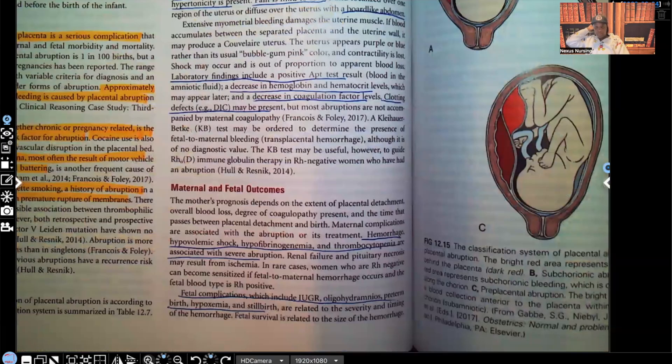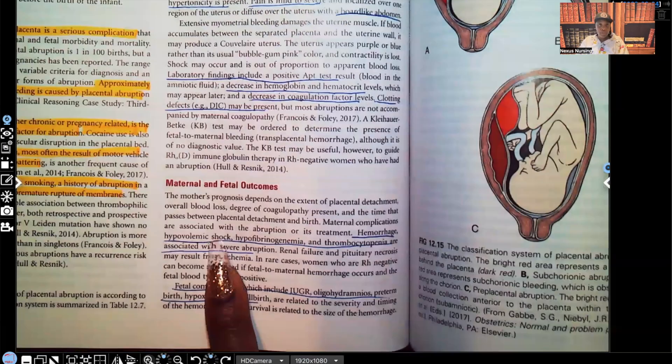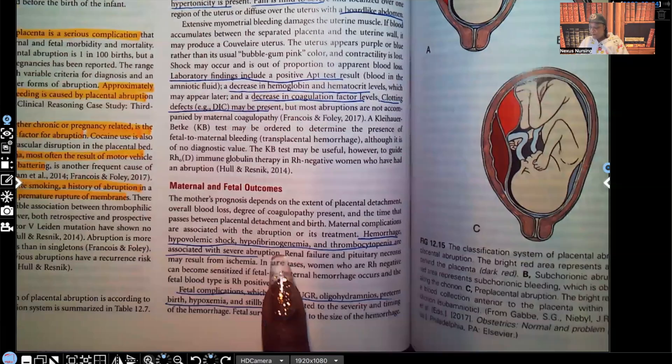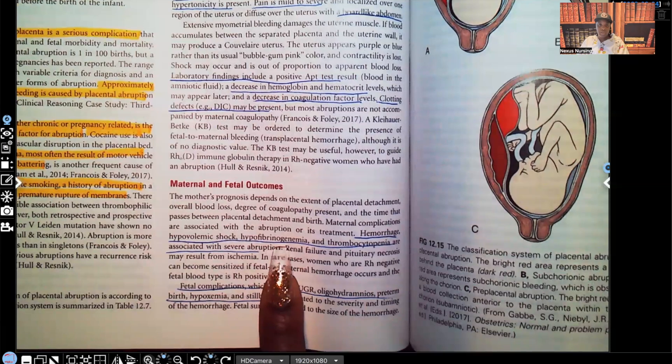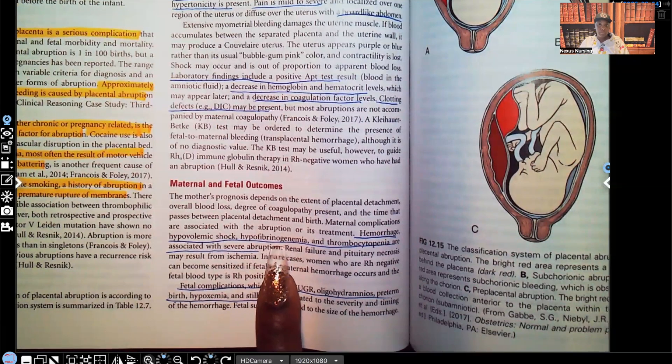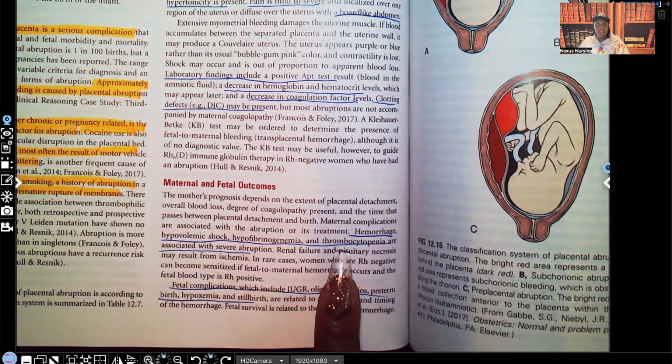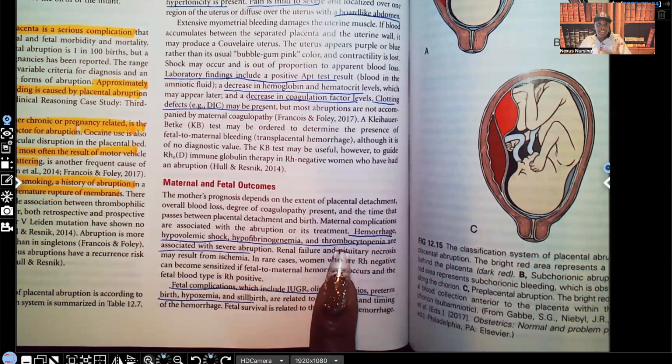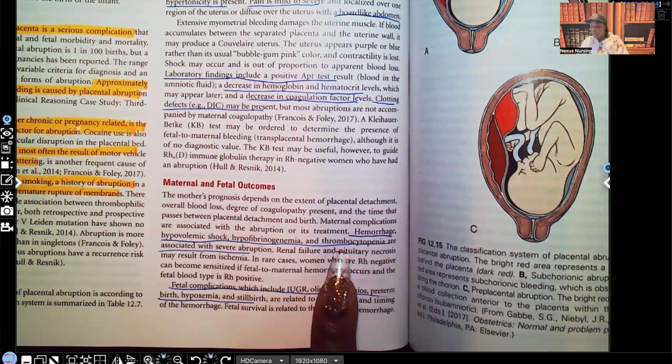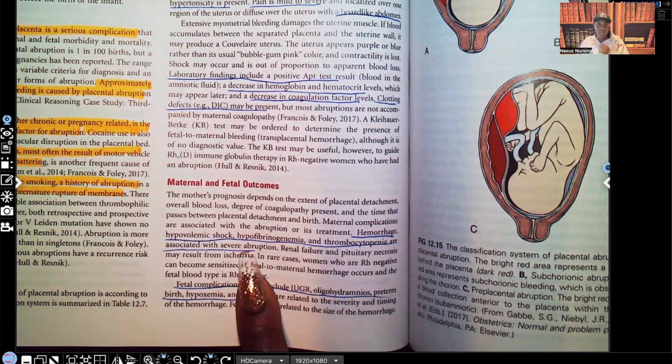Maternal and fetal outcomes. Hemorrhage, her bleeding out. Hypovolemic shock, those organs shutting down from the blood loss. Hypofibrinogenemia. That patient's not clotting the way they're supposed to be clotting to try to stop that bleeding. Thrombocytopenia. They're not clotting enough. The clotting is not compensating enough to stop that bleeding. All of these are associated with severe abruption. That blood loss is just too much for the body to compensate.